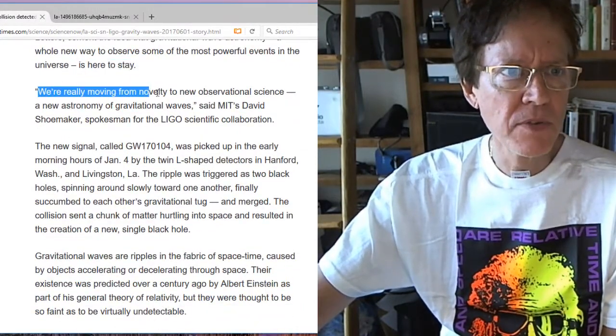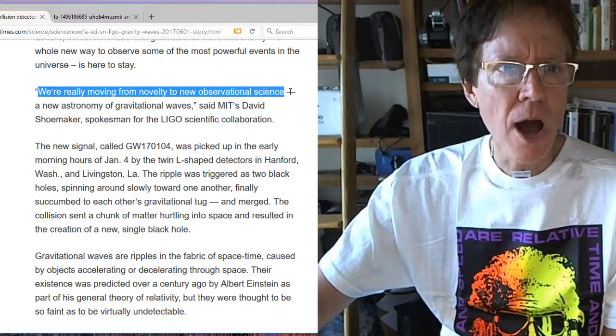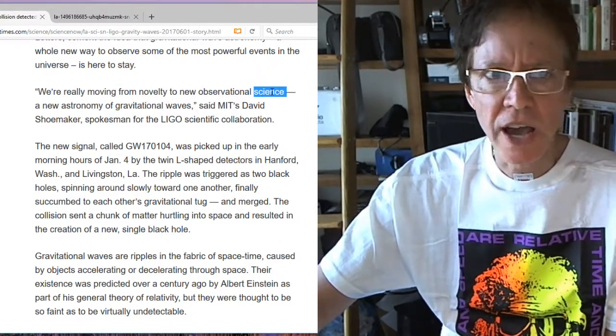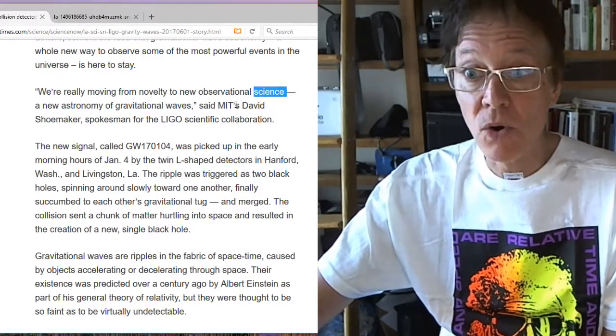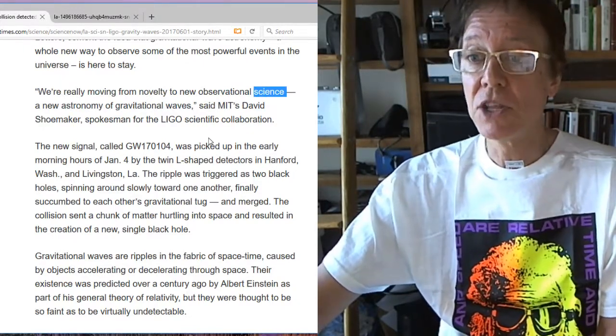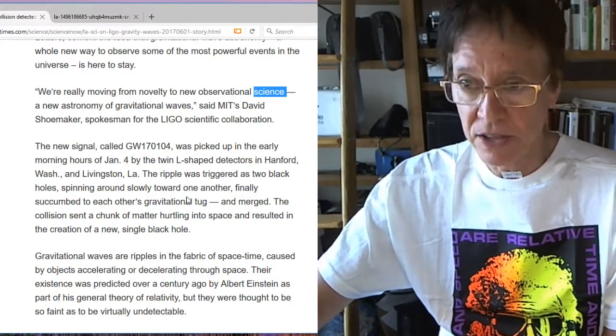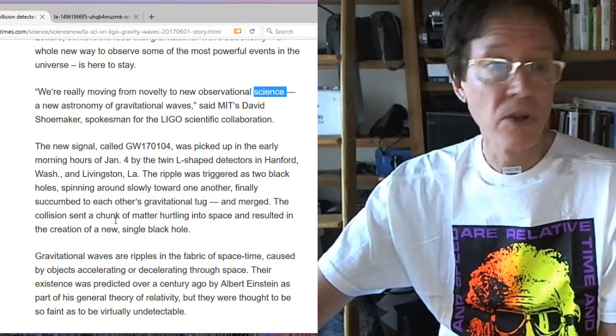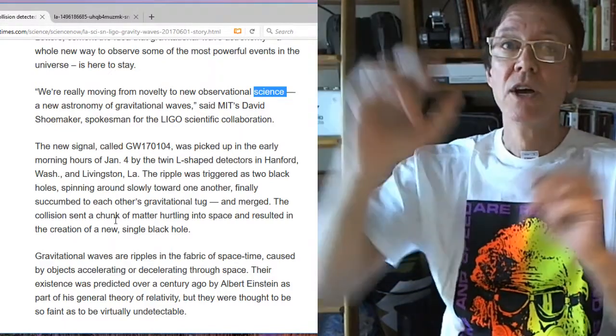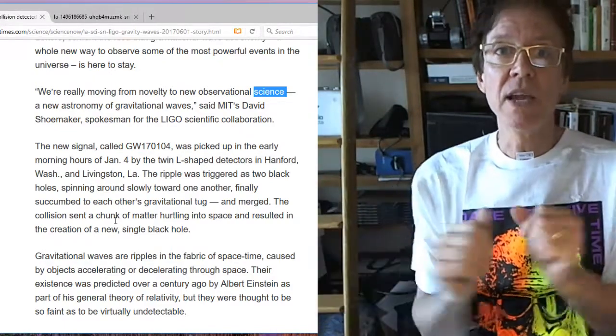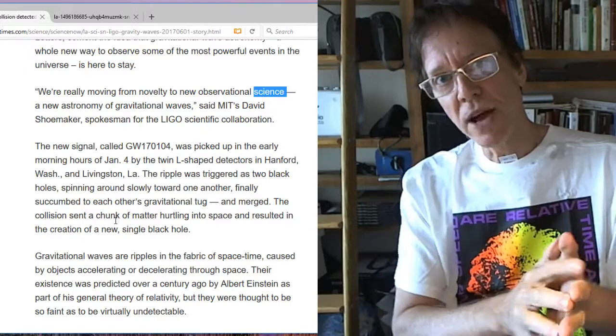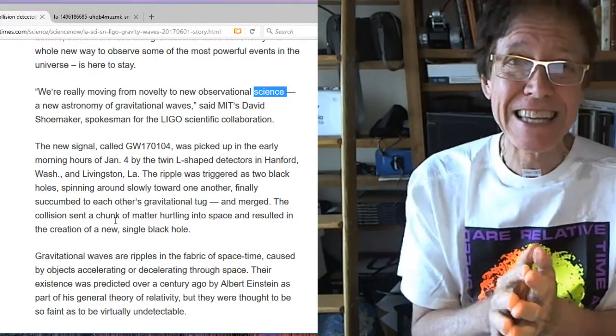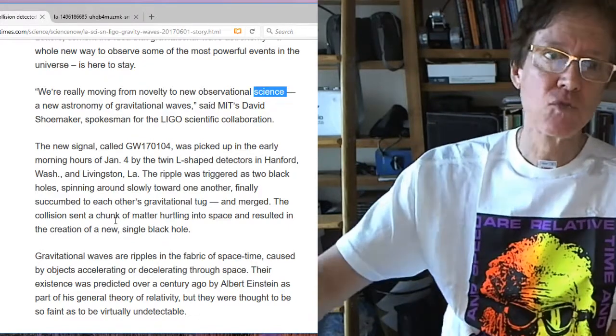And of course, we're really moving from novelty to a new observational science. You see, it goes from novelty to science. This means they are preparing us now for their next endeavor on unicorn science. I call it unicorn science because unicorns don't exist. But of course, you can talk about them all day long, the breeding habits, the colors of unicorns, what they eat, and where they're found. You can have a whole science around it, just like Harry Potter. But it does not mean it is real.